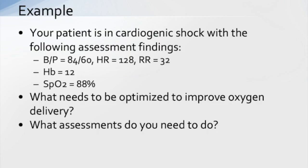Going back to our hemodynamics: if the blood pressure is low and we're in cardiogenic shock — the pump isn't working and contractility is low — what happens to the blood coming to the heart? It backs up, and preload increases. If the left side of the heart backs up, it backs up into the lung. That increase in respiratory rate and low SpO2 could be related to fluid backing up into the lungs causing pulmonary edema. We need to do a thorough cardiac and respiratory assessment, considering all the components of oxygen delivery.